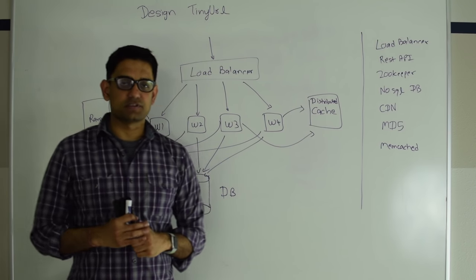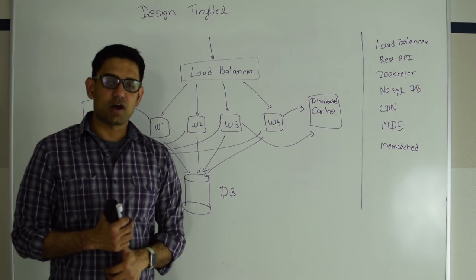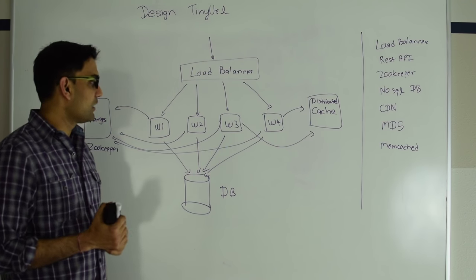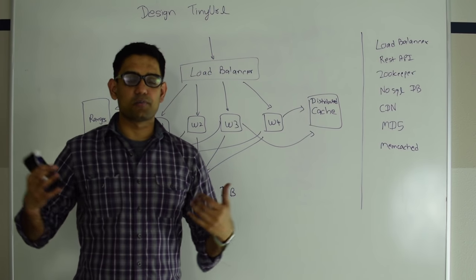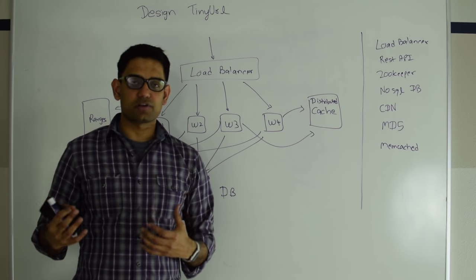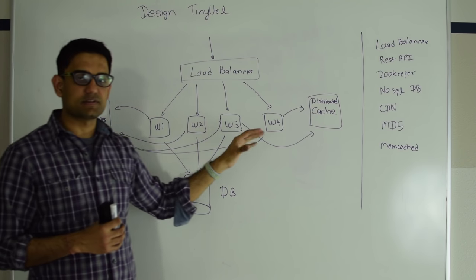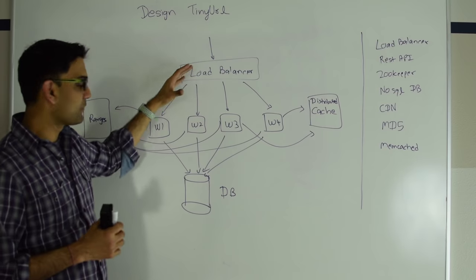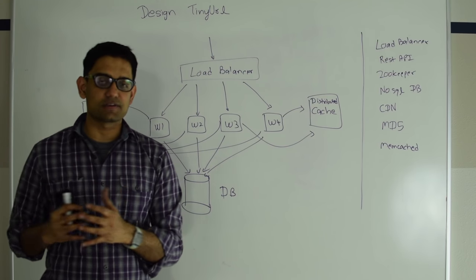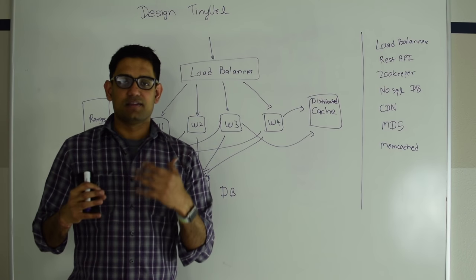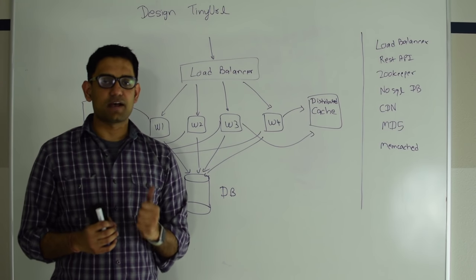One more thing I want to talk about is global usage. Suppose your server system is in the US but your users are in Europe, India, or other countries. For the tiny URL use case, the create URL can be slow, but GET (retrieving the long URL for the short URL) should be extremely fast. During GET, the request goes all the way to the main server system, creates the tiny URL, and then caches the tiny URL and long URL mapping in a CDN in the user's local country or city. So subsequent GETs can be responded to from that CDN itself. CDN stands for Content Delivery Network.